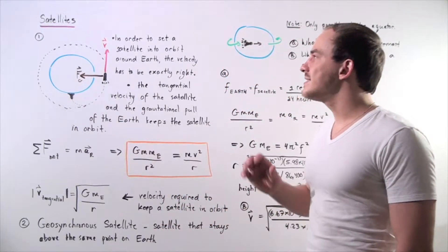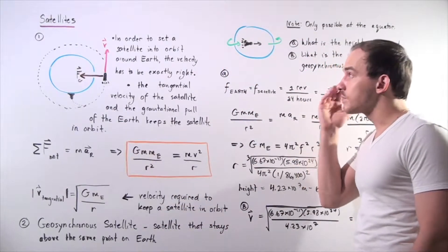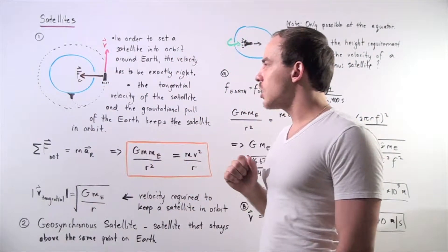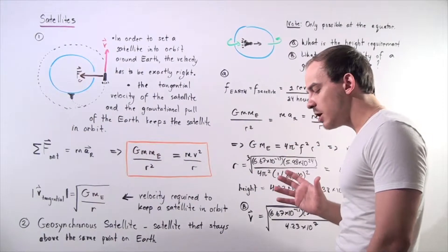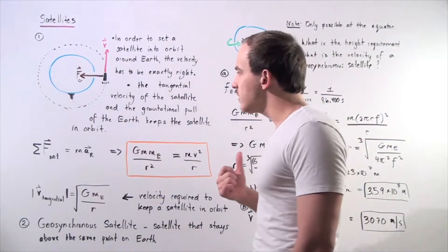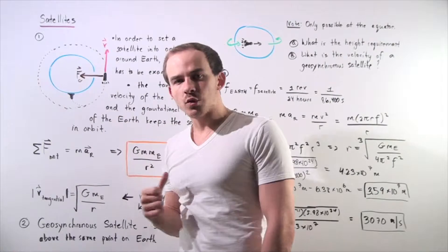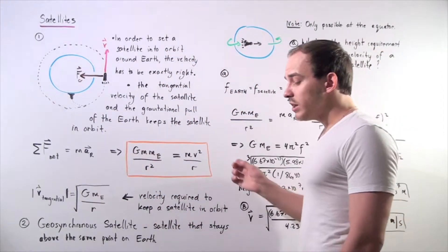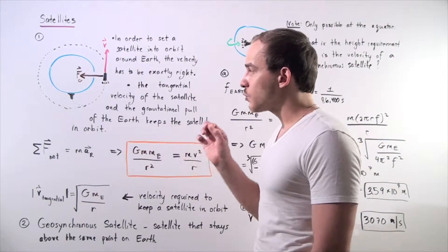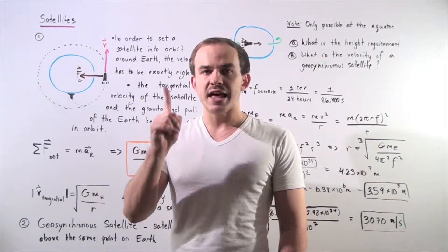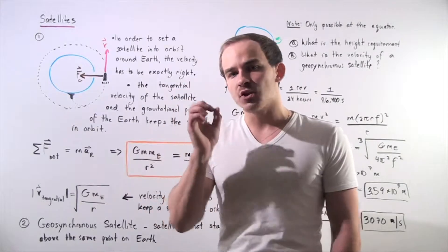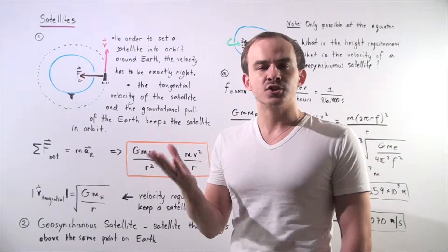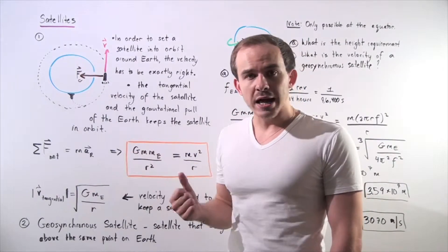Let's discuss satellites and satellite motion. Suppose we have a satellite on the surface of the Earth, and we want to force it into a circular orbit. In order to set our satellite into orbit, the velocity must be exactly right. If the velocity is too low, gravity will pull the satellite back to the ground.